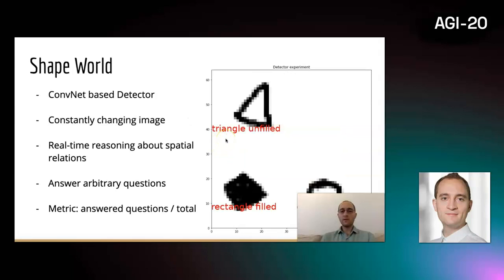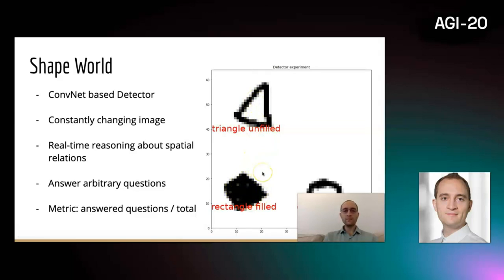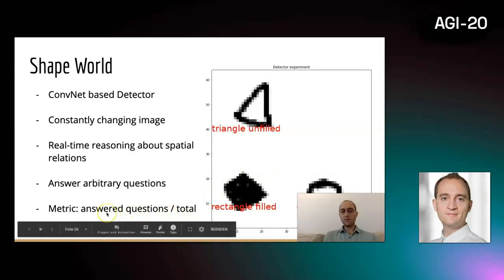Another example we have tested the system with is ShapeWorld, where there is a ConvNet-based detector which detects different object categories and some additional properties of the object, in this case simple shapes and whether they are filled or not. This picture can constantly change, the shapes can move around, and we expect the system to be able to answer arbitrary questions about this scene. We can measure the capability by the answered questions over the total ones.